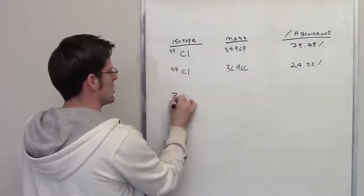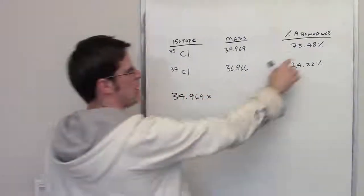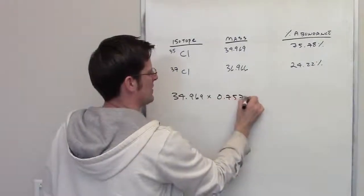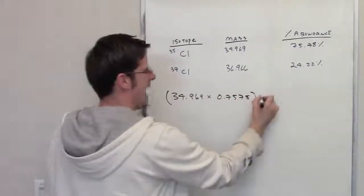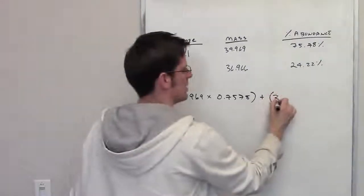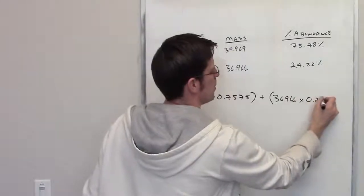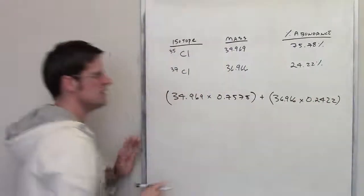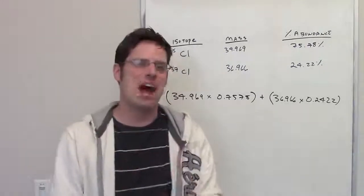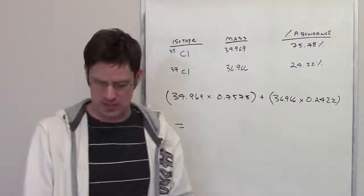We'll take our mass of our chlorine-35, 34.969, and we multiply it by its percent abundance divided by 100, so 0.7578. We then add to that the same thing for chlorine-37, 36.966 multiplied by 0.2422. You do that, the final number that you come up with is the weighted average atomic mass for all chlorines, both chlorine-35s and chlorine-37s.